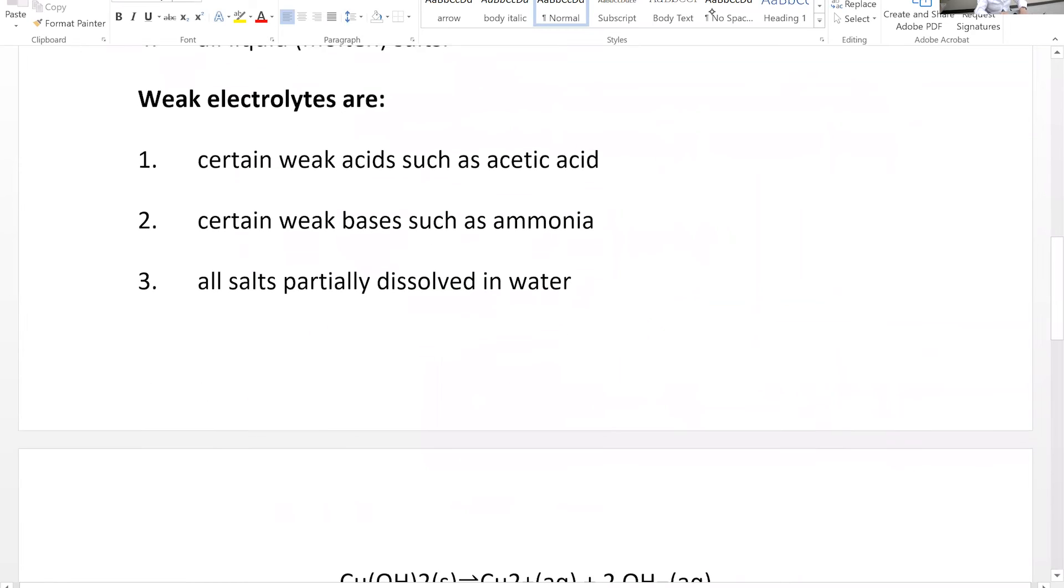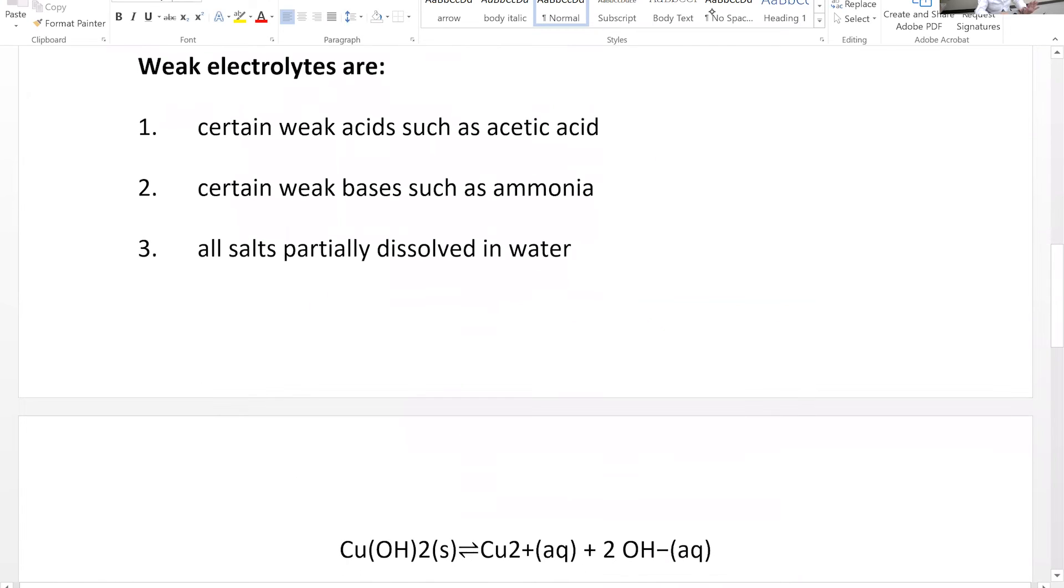So we talked about the strong electrolytes, non-electrolytes. So what are weak electrolytes? Weak electrolytes, those are weak acids or weak bases. So if you have like acetic acid, CH3COOH, when it does dissociate, it reaches equilibrium. And when it does reach equilibrium, COO minus plus H plus, that is generating ions,